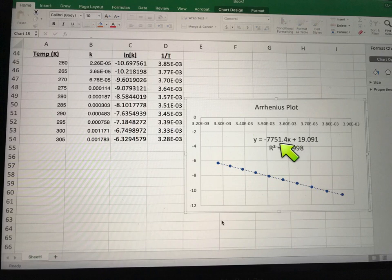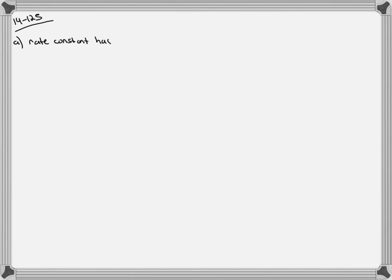By graphing, we can get these two numbers and calculate part B. With the information that we have, let's answer part A first, and then we'll go back and finish part B.